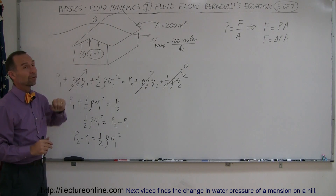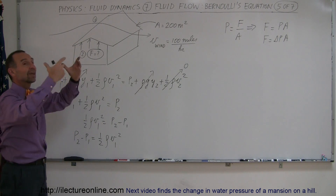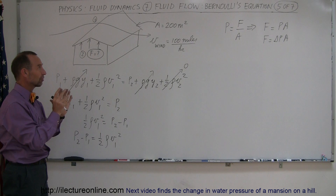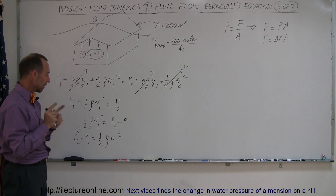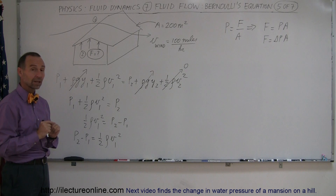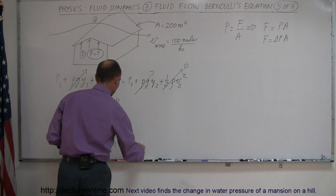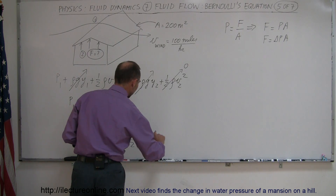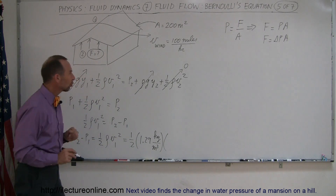When very strong winds blow over houses, there's less pressure on the outside, and the roof has a tendency to be pushed off from the extra pressure of the air inside compared to the outside. So we still need to calculate what that force is.